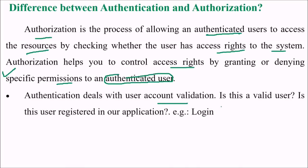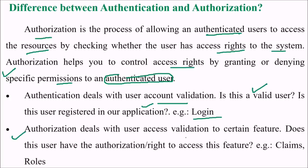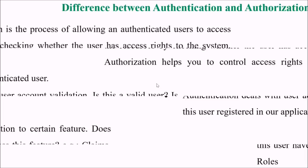Authentication deals with user account validation — is this a valid user, is this user registered in our application? For example, login credentials. Authorization deals with user access validation to certain features, and whether the user has the authorization right to access that feature — for example, through claims or roles.